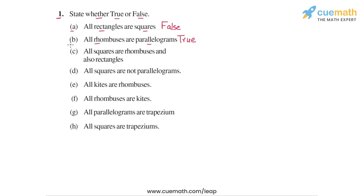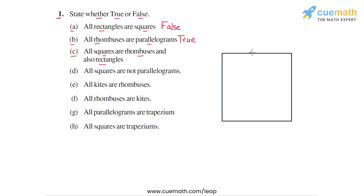The third statement is: all squares are rhombuses and also rectangles. Consider a square — by definition, a square is a parallelogram in which all sides are equal, so a square is a rhombus. Also, in a square all angles at all vertices are 90 degrees, so a square is also a rectangle. Therefore, the third statement is true.